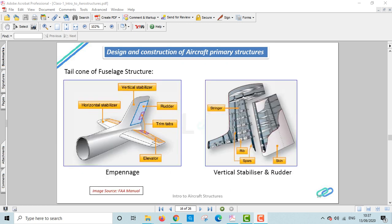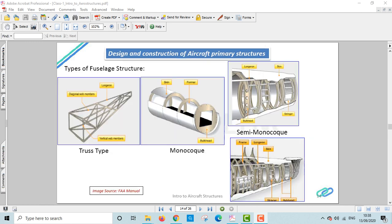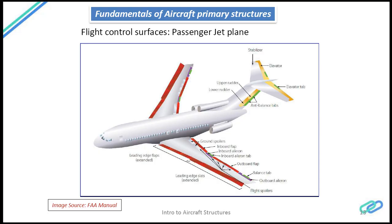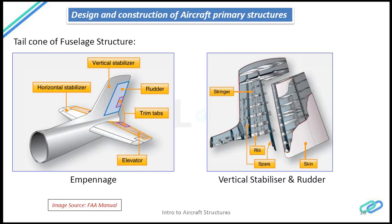Now we'll be moving on to the tail cone, or the aft fuselage, which is also called the empennage. The aft fuselage comprises a tail cone, the vertical stabilizer, and the horizontal stabilizer. The modern-day aircraft tail cone houses an auxiliary power unit, which is a miniature engine that generates power for all electrical and cabin pressurization systems. The horizontal stabilizer comprises elevators and the vertical stabilizer comprises the rudder.